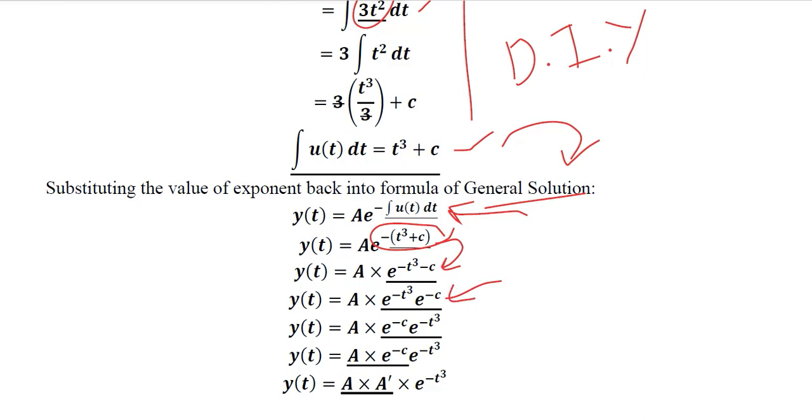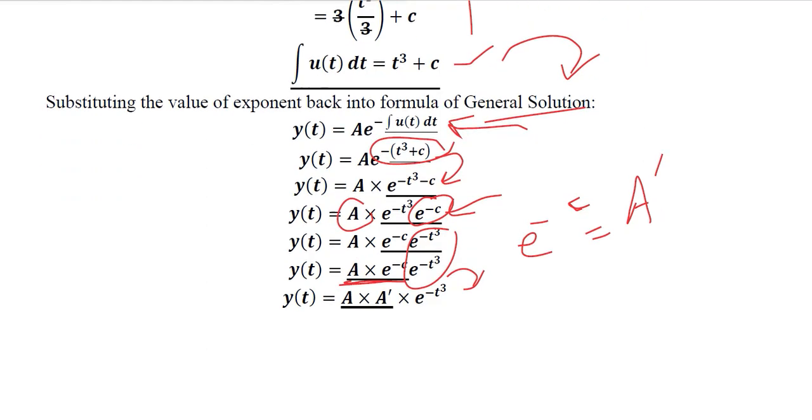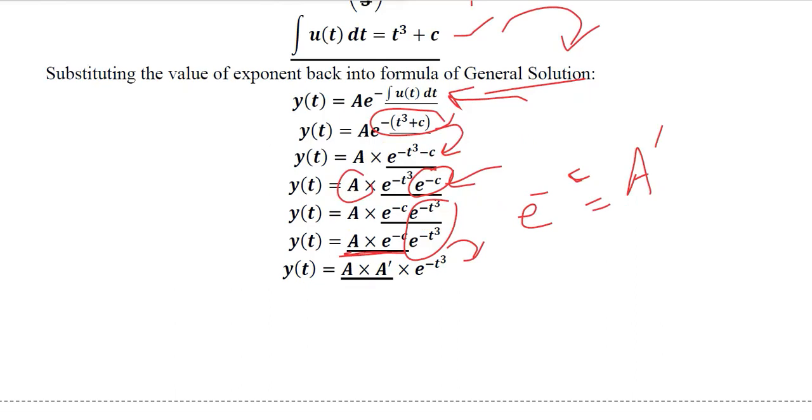And then writing them in a reverse order, because we know this e raised to the power, exponent of minus t³, minus c and A, they can be clubbed together into a constant. Here we have underlined them. And the t term should be written separately at the end. So exponent of minus c can be called as another constant, which we call A bar. And then A bar multiplied with A can be termed as capital B, which will be yet another arbitrary constant. This term remains the same.